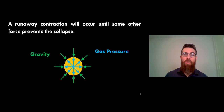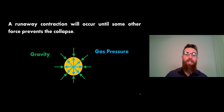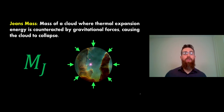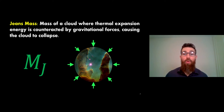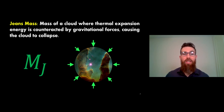You then get a runaway contraction, but there is something that will limit that collapse - at some point those forces start to balance out again. The gas pressure increases and you're somewhat limited, and at that point we're getting close to the formation of a star at the centre. We can mathematically work out an expression for the mass of a cloud at the point it becomes unstable to gravitational collapse. That's the Jeans mass - the mass of the cloud where thermal expansion energy is counteracted by gravitational forces causing collapse.